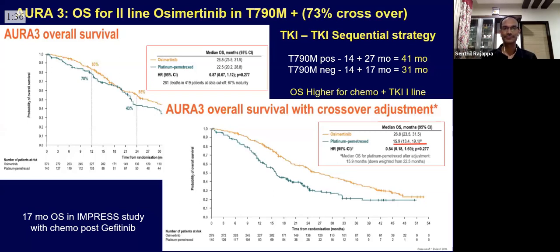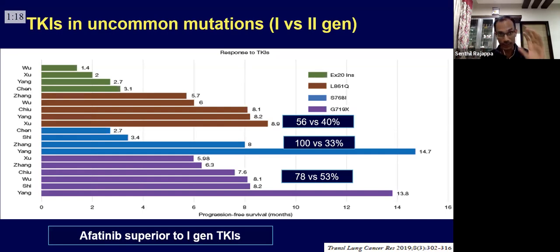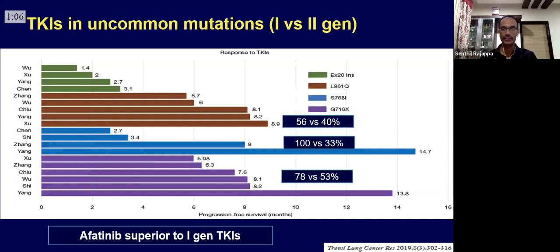Moving towards the end, we come to uncommon mutations. With greater application of NGS, we're seeing more patients with uncommon mutations — roughly 8 to 10 percent. For uncommon mutations, the drug that takes the cake is afatinib, as it has the greatest data in this group. The comparison between afatinib and first-generation TKIs shows afatinib clearly trumping the first-generation TKI in terms of response rates.